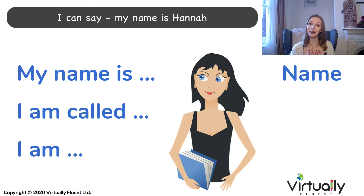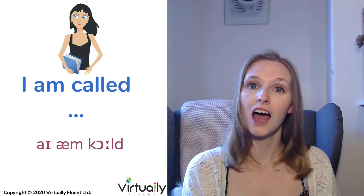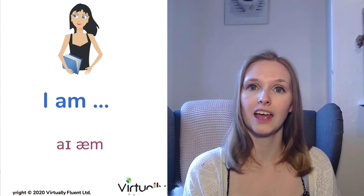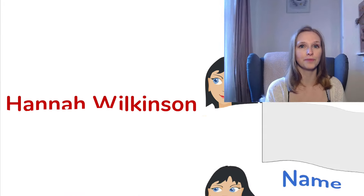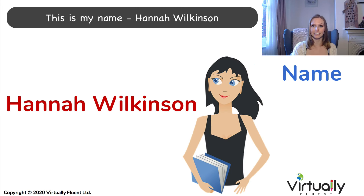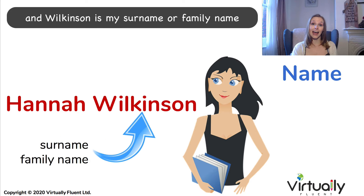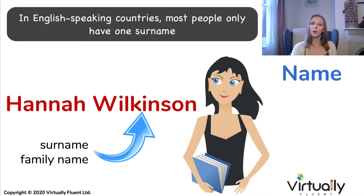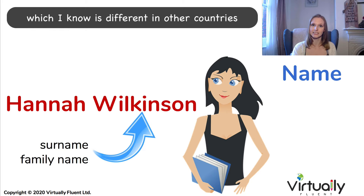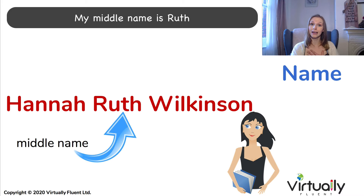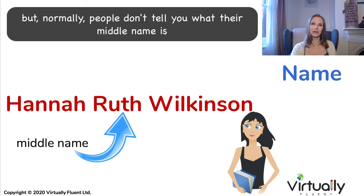I can say: 'My name is Hannah.' This is my name — Hannah Wilkinson. Hannah is my first name and Wilkinson is my surname or family name. In English-speaking countries most people only have one surname, which I know is different in other countries. Most people also have a middle name — my middle name is Ruth.